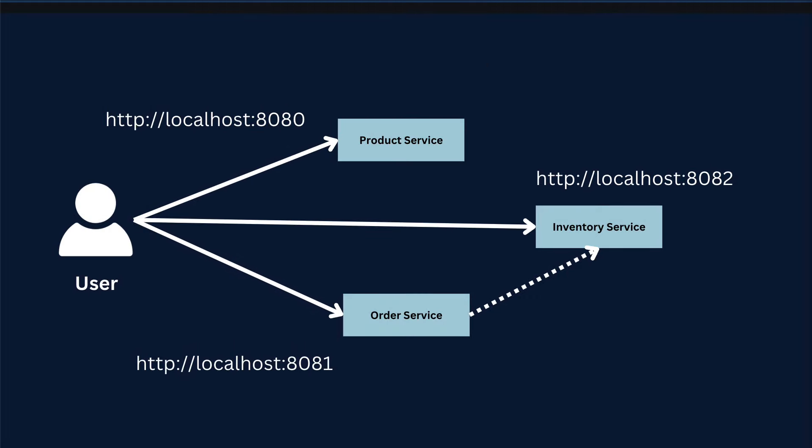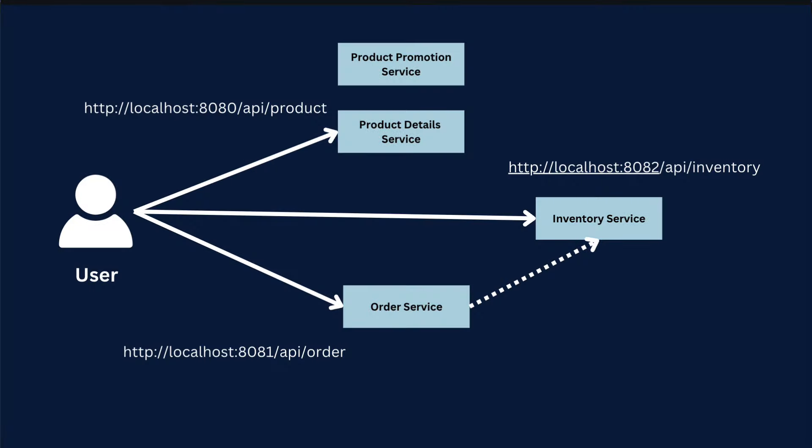In our present system landscape we have our product service, order service, and inventory service. The order service is running on localhost 8080, order service on 8081, and inventory service on 8082. If a user wants to call the product service, we call it with URL localhost 8080. This is fine for the local dev environment, but if we move to production we will be using a different URL, and at any point there can be changes to this product service.